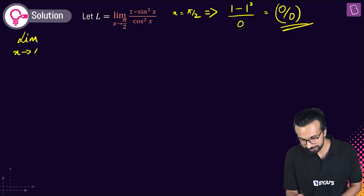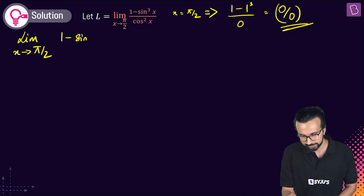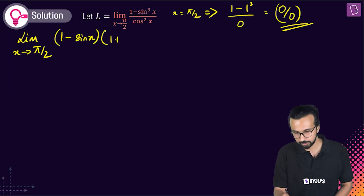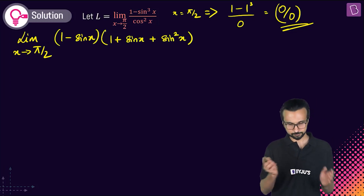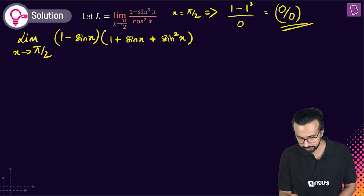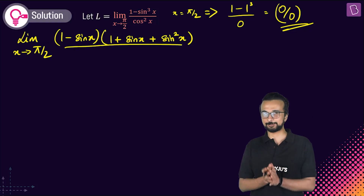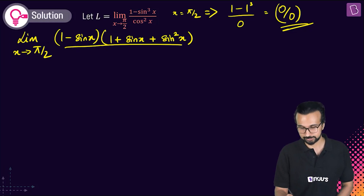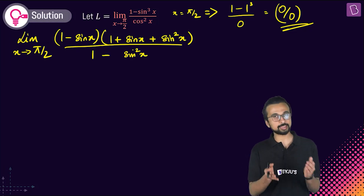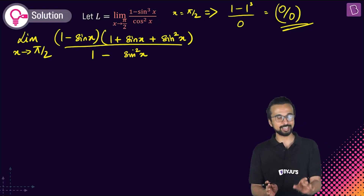We write (1 - sin³x) as (1 - sin x)(1 + sin x + sin²x) using the factorization a³-b³ = (a-b)(a²+ab+b²). For the denominator cos²x, we write it as (1 - sin²x). Now notice: (1 - sin²x) = (1 - sin x)(1 + sin x) — an a²-b² form.